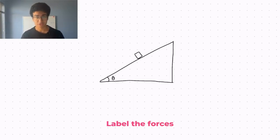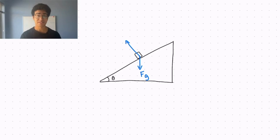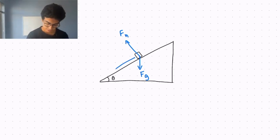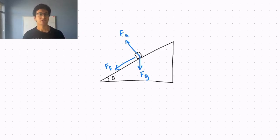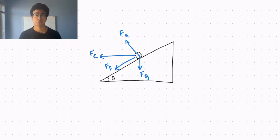Here is our object traveling around a banked track. We know there is a force of gravity acting on the object, which we'll call Fg, a normal force perpendicular to the surface called Fn, and a friction force acting down the slope. Since the object is traveling in circular motion, the resulting force of all of these is the centripetal force Fc, acting directly to the center of the circle. The centripetal force is a net or resultant force — it is all the other forces added together.